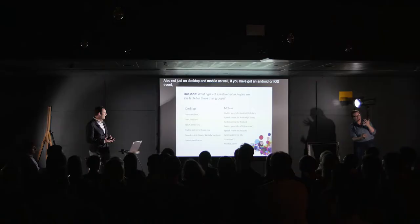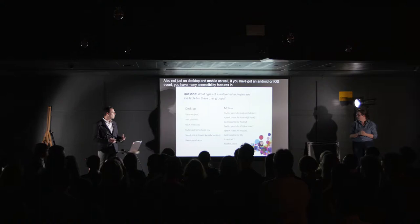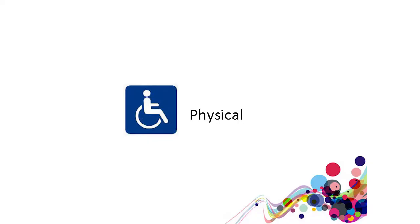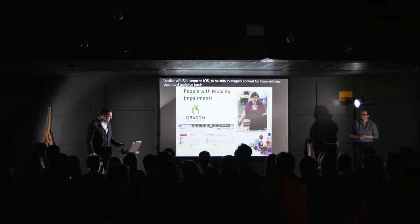On mobile, if you've got an Android or iOS device, you've got native accessibility features built into the device itself. On Android there's TalkBack, S Voice, and switch control for mobility impairments. On iOS there's Siri, VoiceOver — which many of you are probably familiar with — zoom on iOS to magnify content for those with low vision, and AssistiveTouch for physically impaired users.